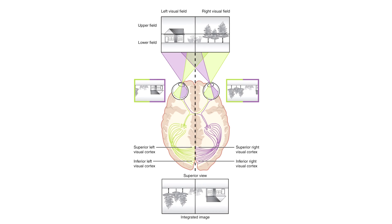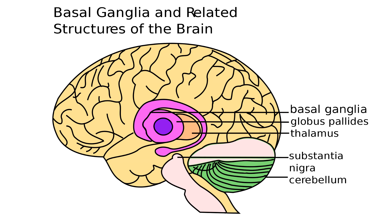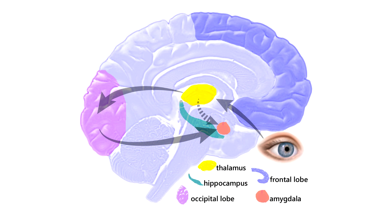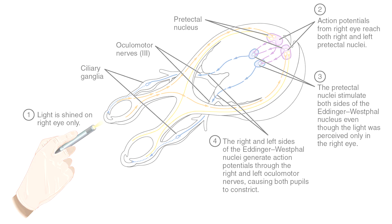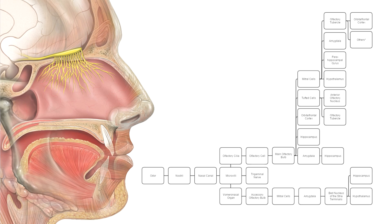Even though the main part of the stimuli reaches its corresponding cortex, some neuronal signals may be processed prior to reaching the cortex. Also, parts may shortcut to other structures in the brain, or to reflexes, often causing bodily effect before the mind becomes aware of the impulse. For instance, olfactory stimuli may prior to processing affect various structures important for memory.